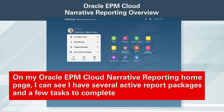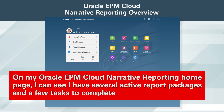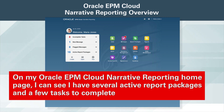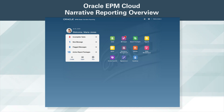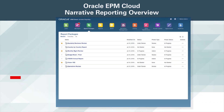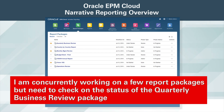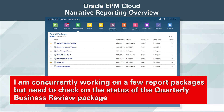On my Oracle EPM Cloud Narrative Reporting homepage, I can see I have several active report packages and a few tasks to complete. We have been working on the quarterly business review package and it is due soon, so I need to check on the status of where we stand. I am concurrently working on a few report packages but need to check on the status of the quarterly business review package.